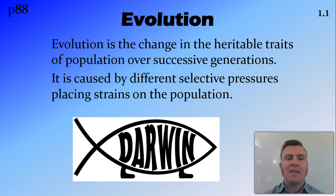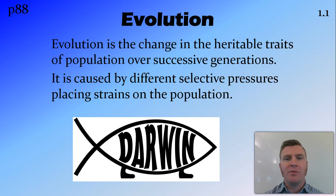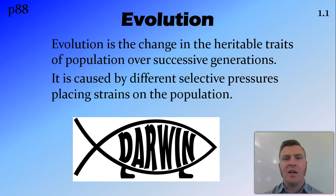The next point is that evolution happens over successive generations. So it's those heritable traits being passed on generation after generation to cause a change in the population. It's not about changes in individuals.